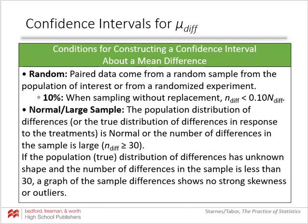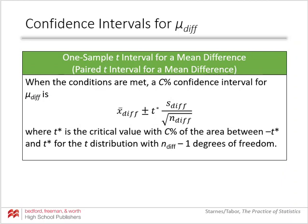In terms of doing the math, a confidence interval for the mean of the difference is basically just a one-sample t interval. We have the same conditions: random condition, 10% condition, and large/normal sample. The formula is: mean of the difference, plus or minus t*, times the standard deviation of the difference over the square root of n. It is important to note that n is the number of pairs, not the total number of data points, and you use n minus one degrees of freedom.